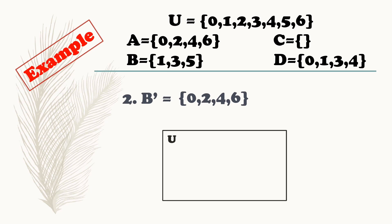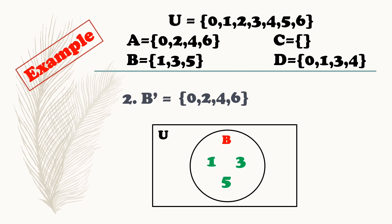Represent natin siya sa Venn diagram. Siyempre, yung nasa loob ng bilog natin ay yung elements ni set B. What are those? 1, 3, 5. At yung nasa labas ng bilog, yung complement ni set B: 0, 2, 4, 6.